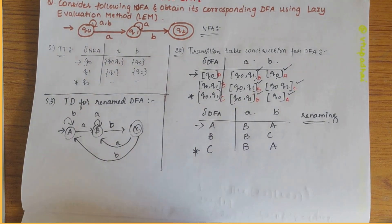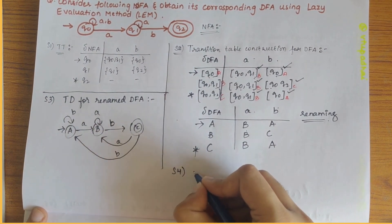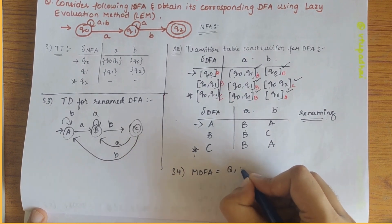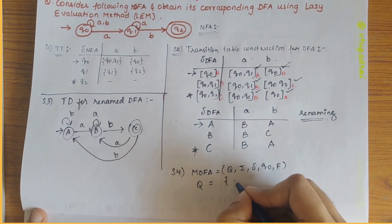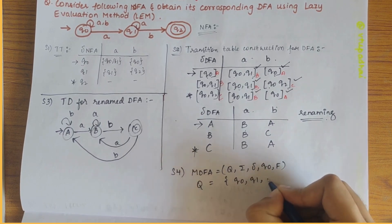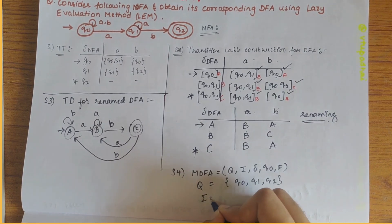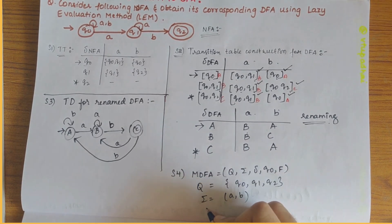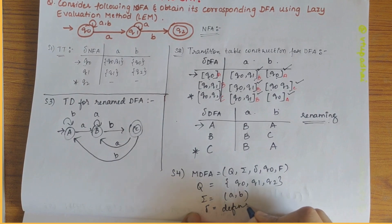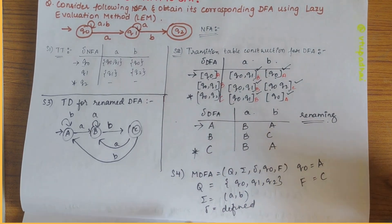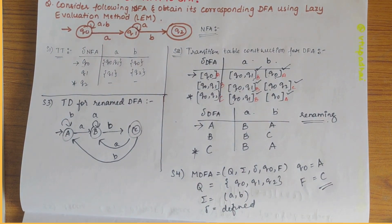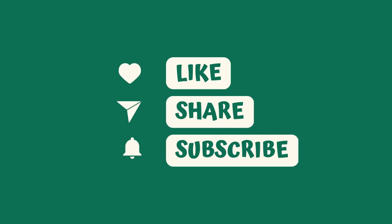Our last step is to define the formal DFA: M = (Q, Σ, δ, q0, F), where Q = {q0, q1, q2}, Σ = {a, b}, the transition function δ is as defined, the start state q0 is A, and the accepting state F is C. We have successfully converted the NFA to DFA using the lazy evaluation method. If you have any doubts, let me know in the comments and subscribe to my channel.